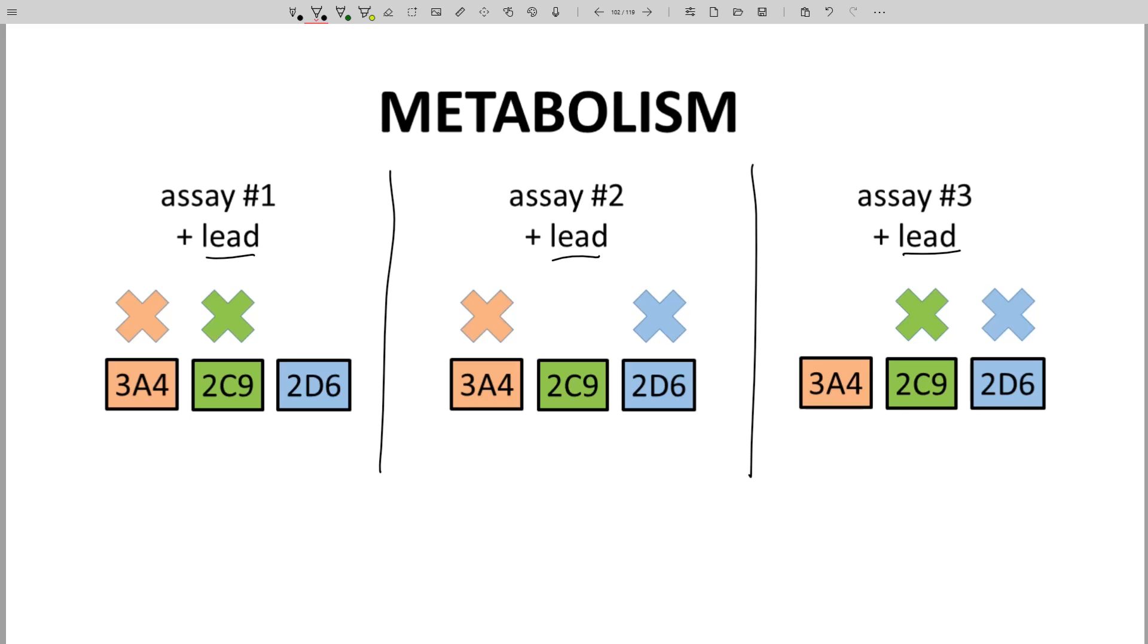Assume CYP3A4 is the active isoform. In these examples, only assay 3 would show a decrease in lead concentration because only assay 3 has uninhibited 3A4. So we would see metabolite forming in assay 3.